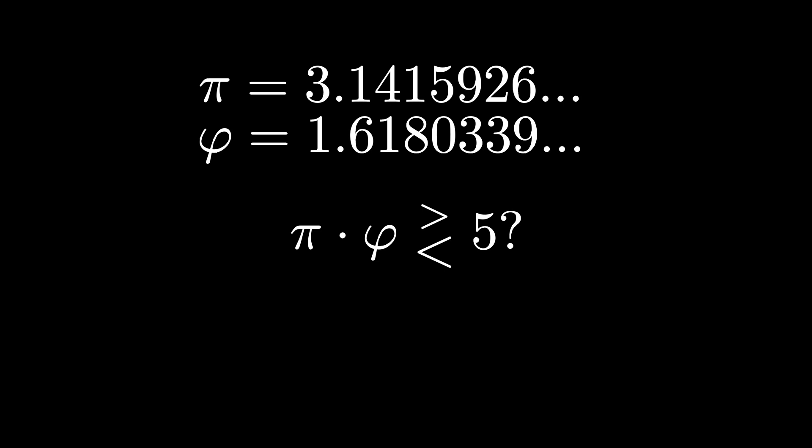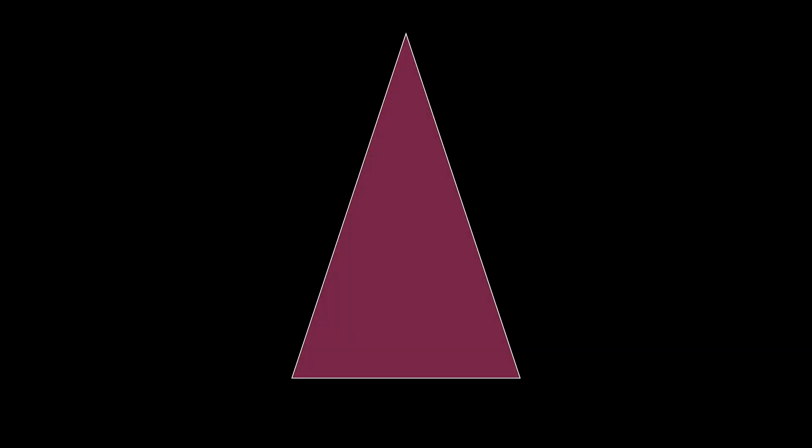Sure we can check this in a calculator, but can we figure the answer out analytically? Let's give it a try. Draw an isosceles triangle with two equal base angles of 72 degrees so that the apex angle is 36 degrees. Suppose the base has length 1 and the other two sides have length x. This triangle sits nicely inside the regular pentagon as shown here.